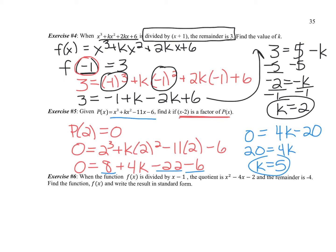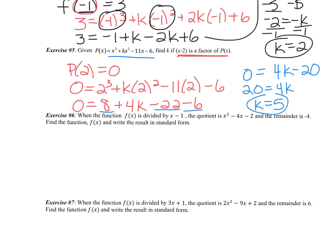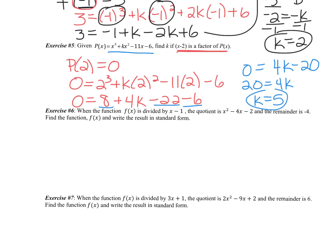The next question is kind of a backwards problem that involves polynomial long division. It says, when the function f of x is divided by x minus 1, the quotient is x squared minus 4x minus 2, and the remainder is negative 4. So we actually want to find the function. So we're trying to find if f of x is divided by x minus 1, the quotient is x squared minus 4x minus 2, and there's a remainder of negative 4. So that means that f of x is equal to this binomial times this trinomial.